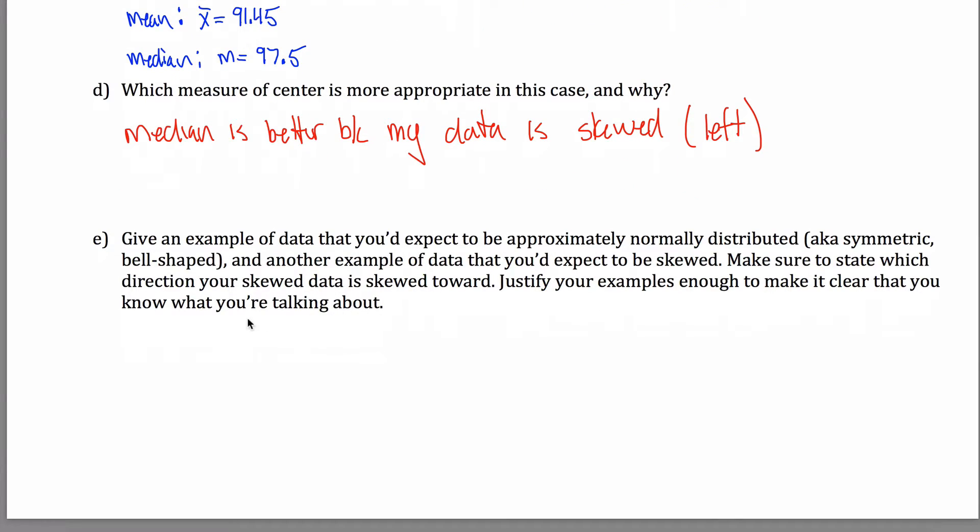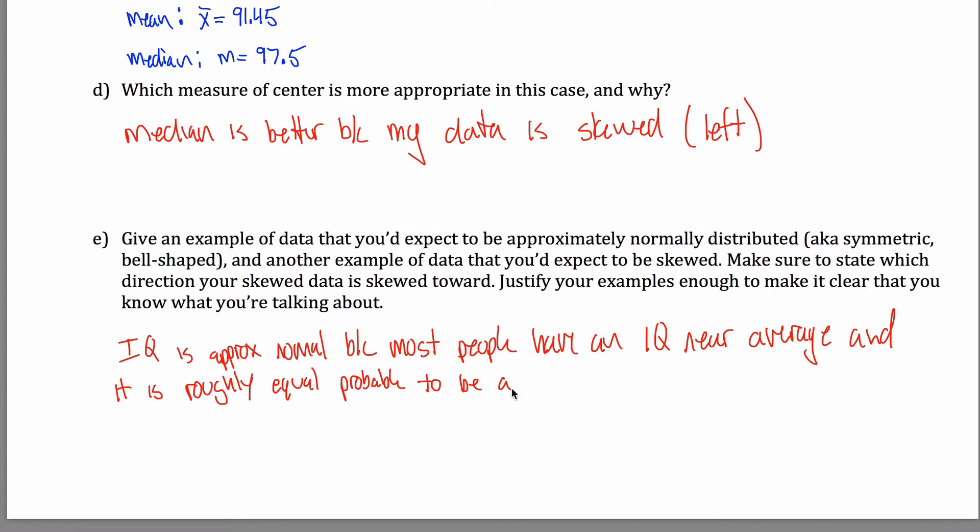Give an example of data you'd expect to be approximately normal. IQ is approximately normal because most people have an IQ near mean, near average, and it is roughly equally probable to be a given distance above or below mean. I doubt anyone writes this on their test, but that basic idea is what I'm getting at. Make sure you understand what approximately normal is.